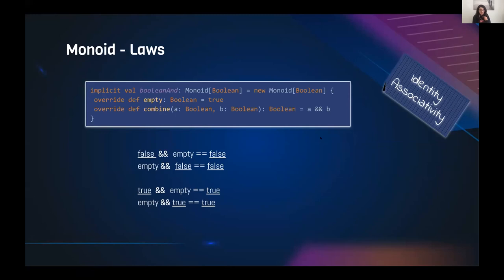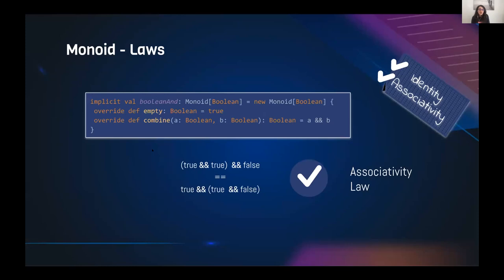For example, Boolean can form a monoid under the AND operation, where 'empty' is true. 'false AND true' is still 'false', and 'true AND true' is still 'true' — empty doesn't affect the result. This satisfies the identity law. Associativity also holds for booleans, so Boolean forms a monoid under AND. Boolean also forms a monoid under OR, but in that case the empty element is false.